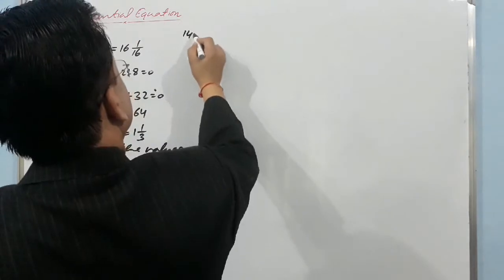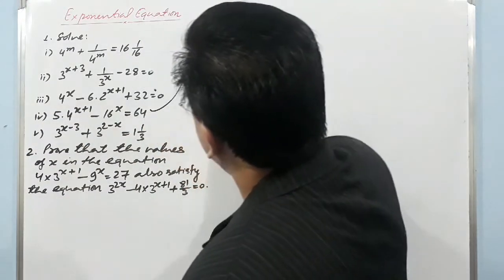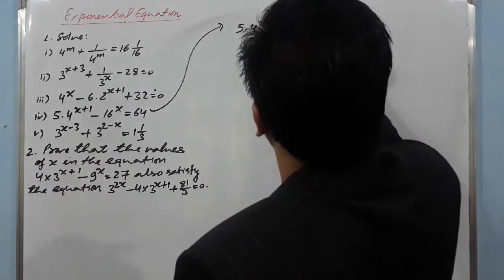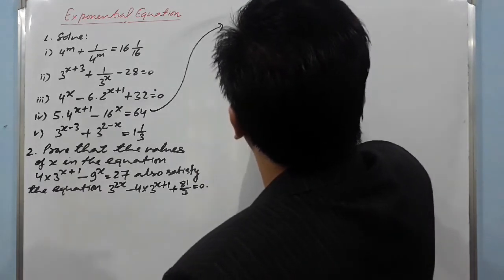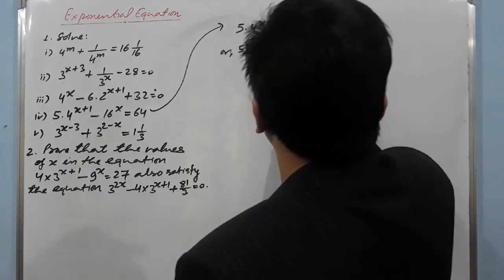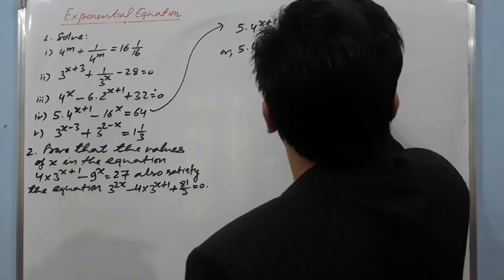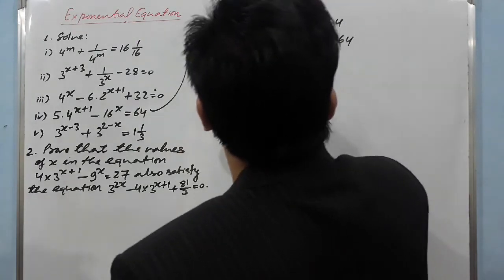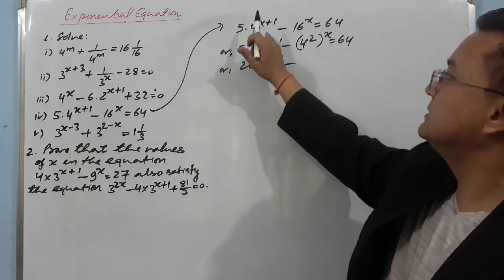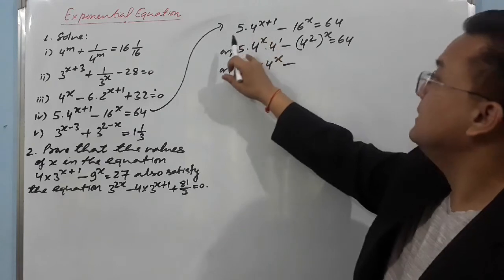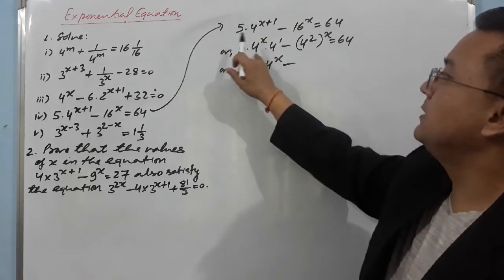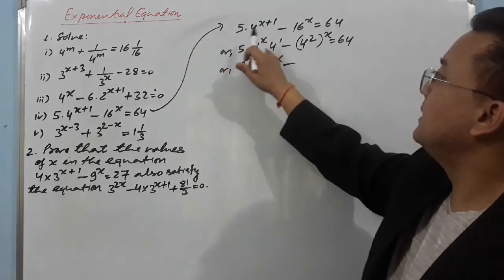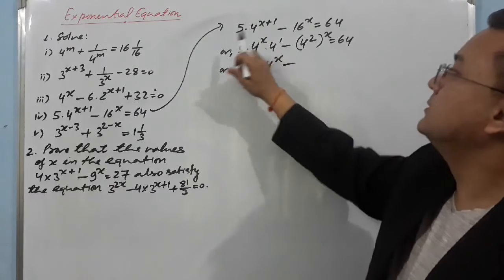Question 4: 5 × 4^(x+1) − 16^x = 64. We write 5 × 4^x × 4^1 − 4^(2x) = 64, which becomes 20 × 4^x − (4^x)² = 64. Note: we cannot multiply 5 and 4^x to get 20^x — 5 is just a real number, not an index. So 5 × 4 = 20, giving 20 × 4^x.